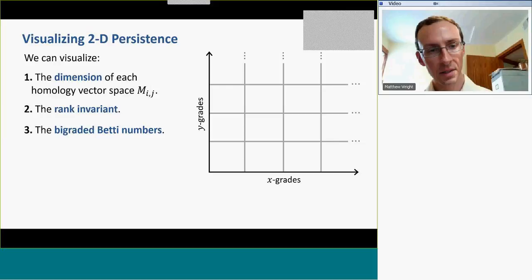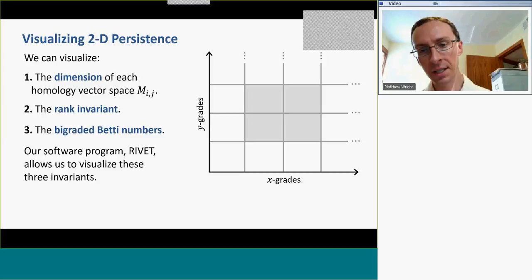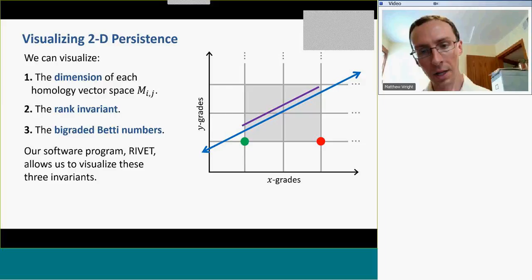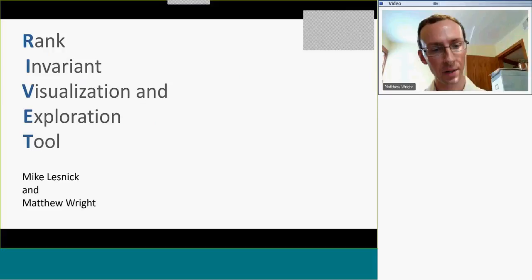So the three invariants of a two-dimensional persistence module that we're going to visualize — Mike and I have spent a tremendous amount of effort creating a software program to visualize these invariants. The software shows shaded areas in the plane indicating the dimension of homology at those points, barcodes along linear slices representing the rank invariant, and the bi-graded Betti numbers via green and red dots. To demonstrate this software program, which we call RIVET — the Rank Invariant Visualization and Exploration Tool — I'll show what RIVET does for the same example I began the presentation with.